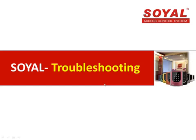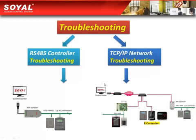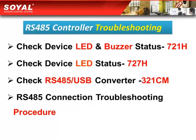Hello everyone, welcome to Soya video. Our topic today is troubleshooting. In the first part, we will cover troubleshooting of RS485 controllers, and in the second part, TCP/IP network troubleshooting. We will show you how to check the 727H device and converter 321CM by observing the LED status, and also provide the procedure of how to understand the status of RS485 connection.